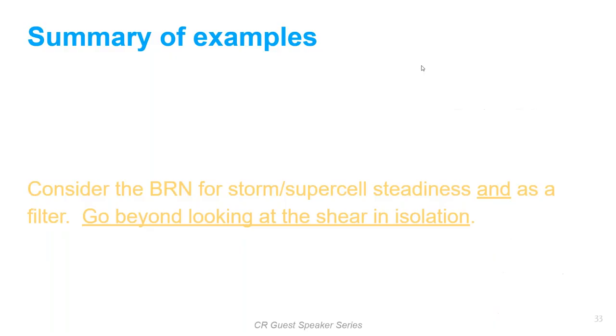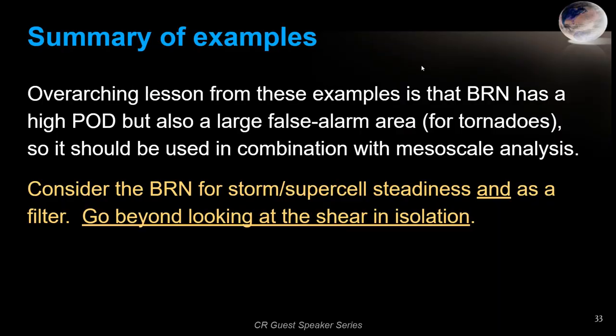To summarize the examples: the BRN can definitely be used as a filter — it has a high probability of detection but also a large false alarm area for tornadoes. It clearly should be used in combination with mesoscale analysis. It's just one variable, one index, but it has utility. The importance is going beyond just looking at shear in isolation — recall that in the first three examples the bulk shear was similar, and the one that produced the EF4 tornado actually had slightly weaker bulk shear than the other two.